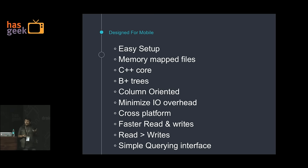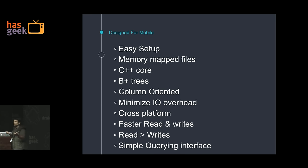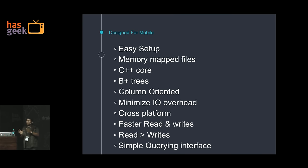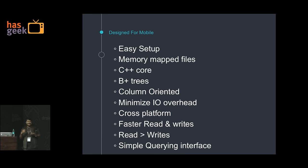What are some of the features? Realm is designed for mobile from the ground up and is very easy to set up. It has a common C++ core, so it is portable across both platforms — you can use the same Realm data across Android and iOS, as long as the schema is not different. It is column-oriented, the data structure used is B+ trees, and it is very fast. They have optimized it for read compared to write. Bulk writes in Realm are slow, but the query interface is very simple — you can chain queries together.